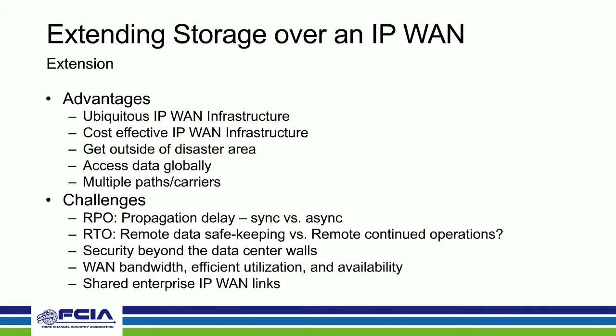The advantages of FCIP: it uses an IP WAN, which is ubiquitous and generally cost-effective relative to other WAN technologies. It gets you outside the disaster area — beyond a metro area, because if a metro area becomes a smoking hole, you want to be outside it. You get global access to data — companies in Europe can move data to the US or Asia. You can use multiple paths and carriers, such as AT&T and Verizon, for different pathways and organizations managing WAN links, providing higher availability.